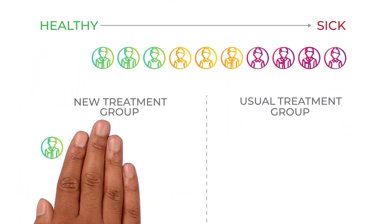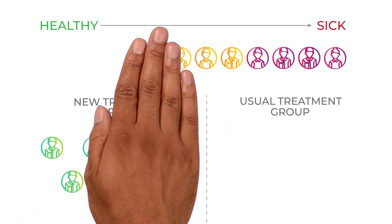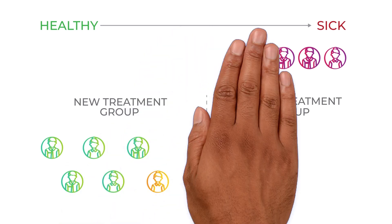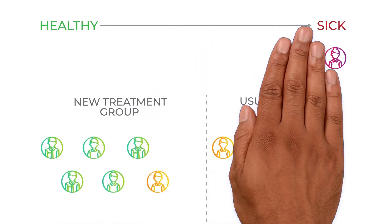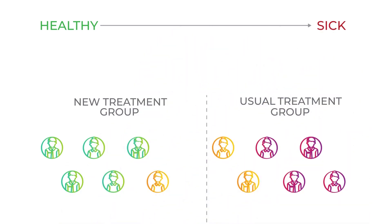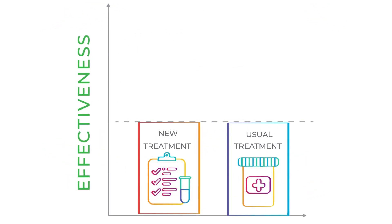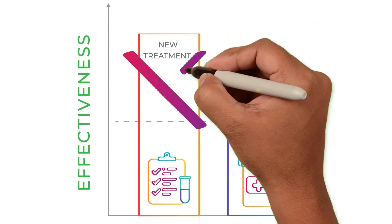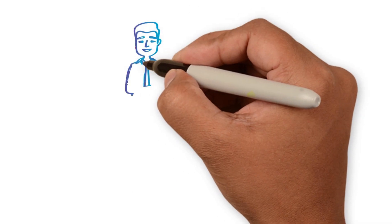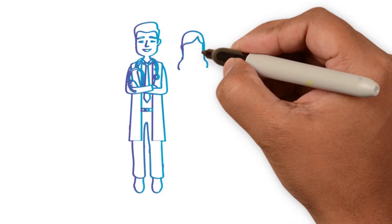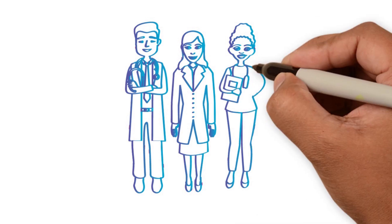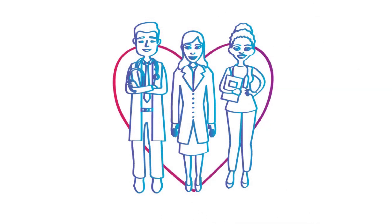For example, without realizing it, a doctor may assign healthier patients to the new treatment group and sicker patients to the usual treatment group. This could make the new treatment seem more effective or safer than it really is. When you join a clinical trial, you can trust that the doctors and nurses will take care of you no matter which group you're assigned to.